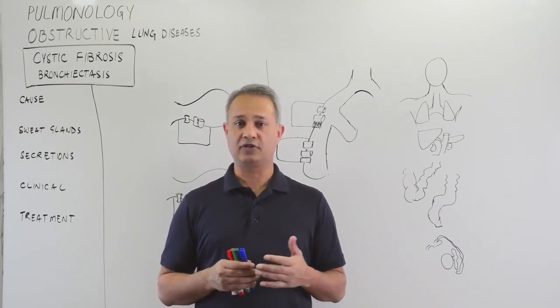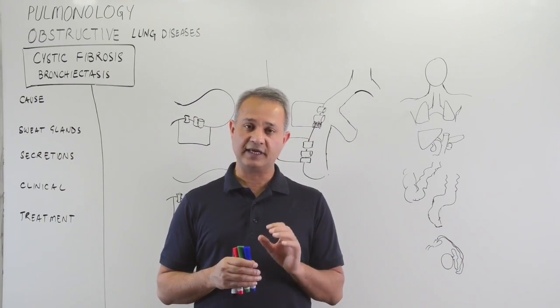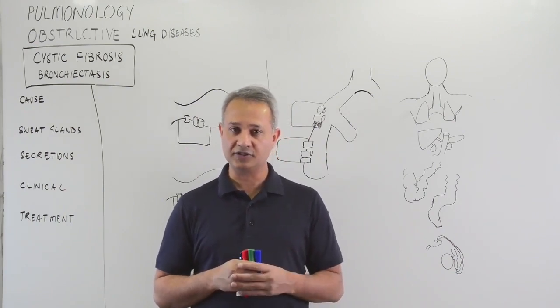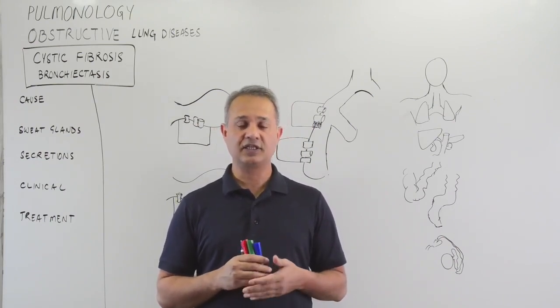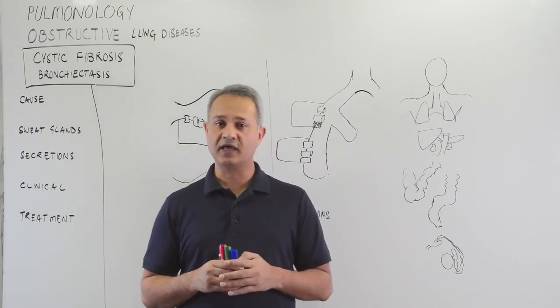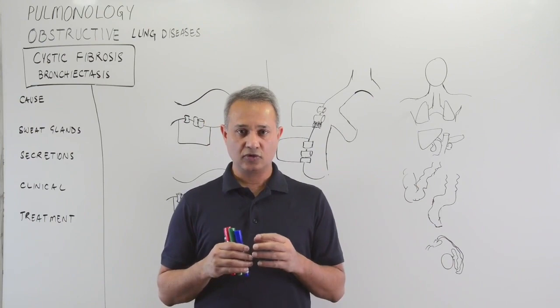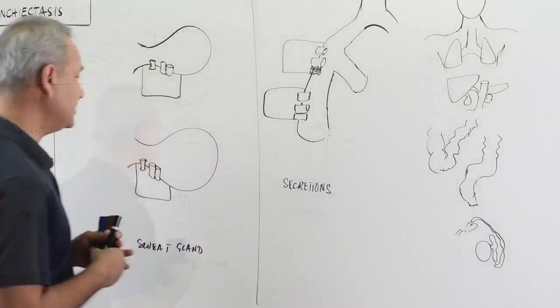It is a disease of Caucasians. 98% of the people affected by this disease are Caucasians. Very rare in Asians and Blacks. Asians, I think it is one in 30,000 people, and Blacks one in 15,000. So common in whites, Caucasians.